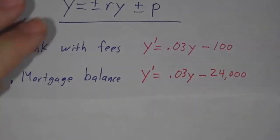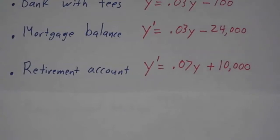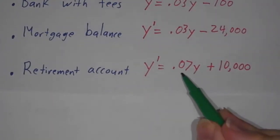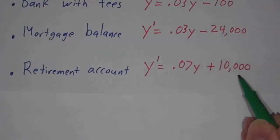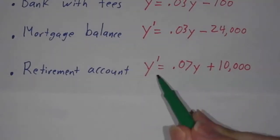Or maybe you've got a retirement account and you're getting 7% return on your investment, and you're adding to it at $10,000 a year because you're saving for retirement. That's the same kind of equation.